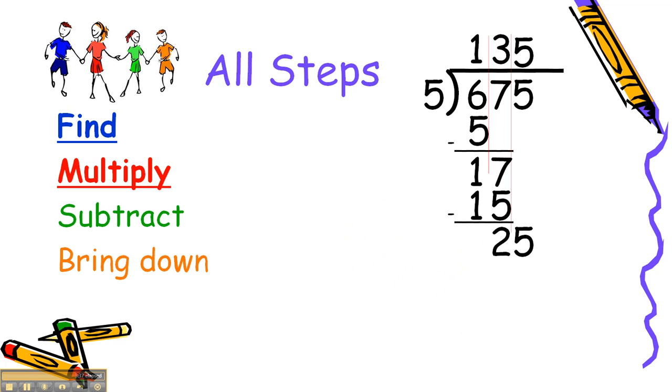We go to the second step, multiply. We're going to multiply 5 times 5 and we get 25. We go to the third step, subtract. This time we take 25 from 25 and our answer is 0.